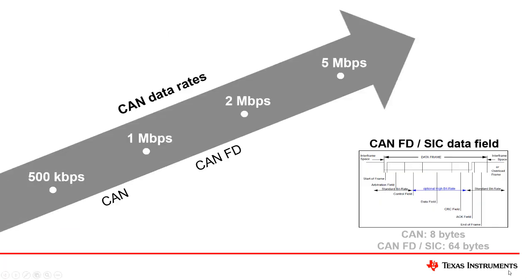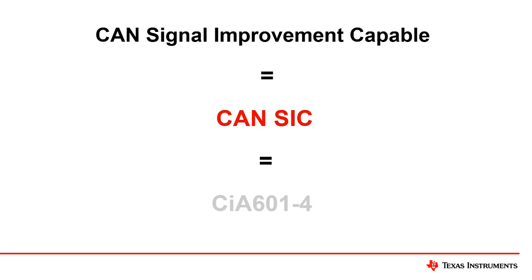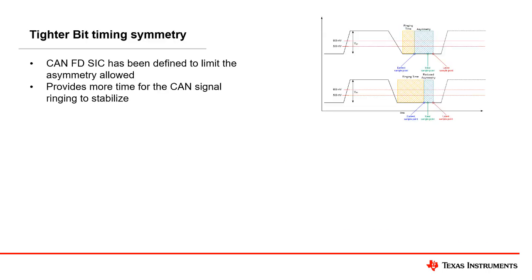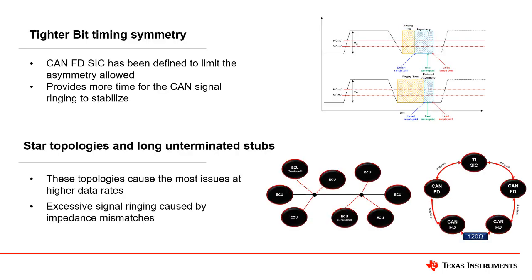CAN-SICK, as defined in CIA 601-4, outlines additional capability for CAN-FD transceivers. Although CAN-FD transceivers are generally rated to 5-megabit-per-second data rates, most designers implement CAN-FD at much lower data rates and in simpler topologies due to excessive bus signal ringing. CAN-SICK, which is fully backward-compatible with earlier CAN specifications, tightens the bit-timing symmetry and loop-delay specification to reduce excessive ringing and enable reliable 5-megabit-per-second data, with support for more complicated STAR and RING topologies.